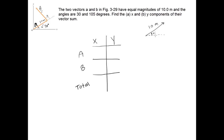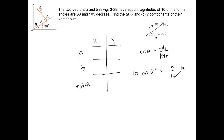Vector A has a magnitude of 10 meters and it's acting at a 30 degree angle. We draw in the x component and the y component. To find the magnitude of the x component we use basic trigonometry. Cosine of an angle equals adjacent divided by hypotenuse. In this case we're looking for the adjacent side and we're given the hypotenuse. So cosine of 30 degrees equals the x component divided by 10, giving us x component equals 10 cosine 30, which is 8.66 meters.